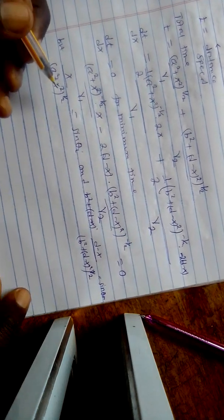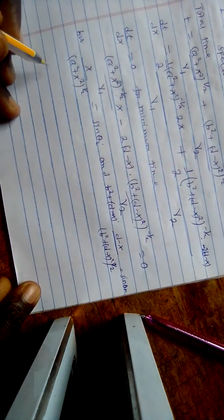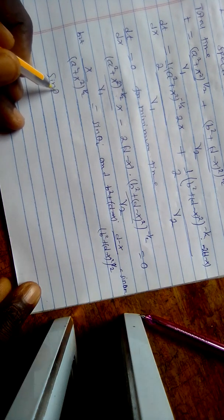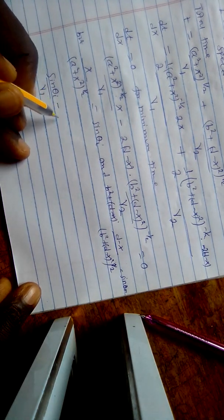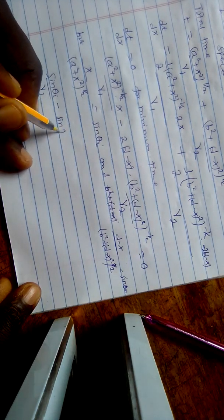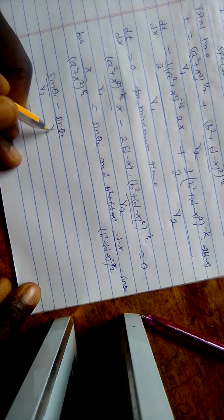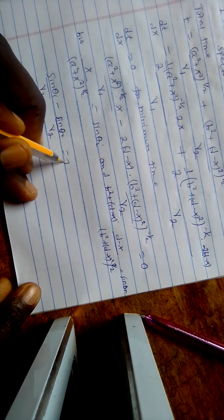We shall have sin theta i over V1 minus sin theta r over V2 equals zero.